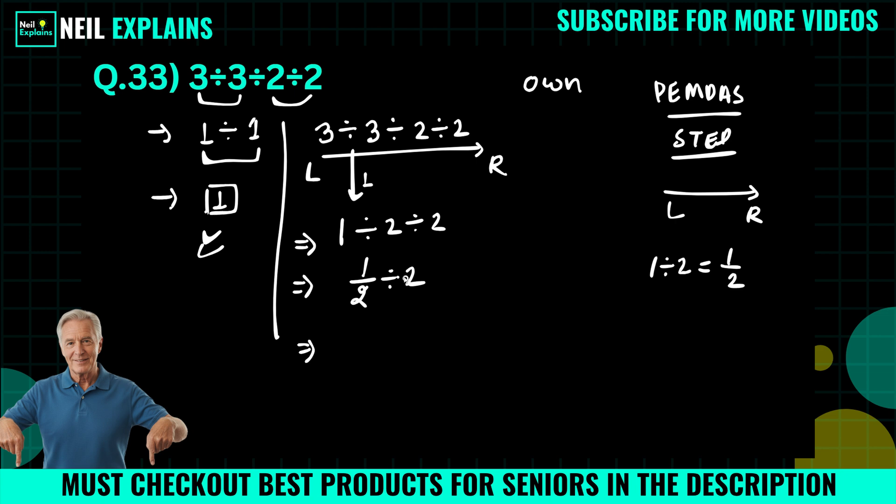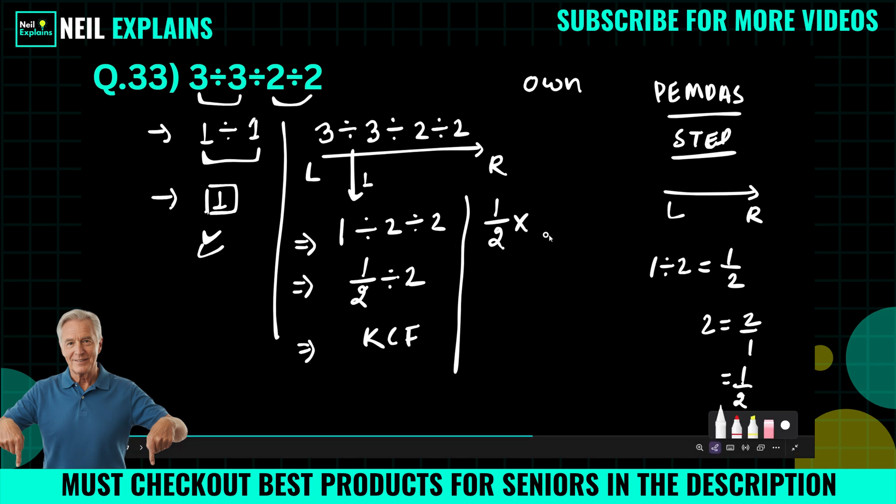Okay, now we will use here the KCF rule here. Okay, KCF stands for Keep, Change, and Flip. We will keep 1 by 2 as it is. This division will be changed into multiplication, and 2, 2 is what? 2 can be written as 2 by 1. So when we flip, it will become 1 by 2.